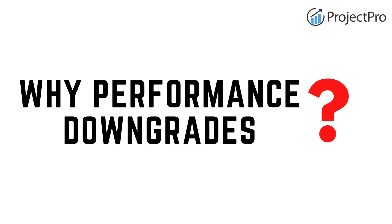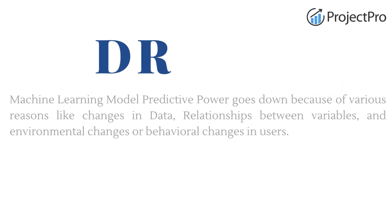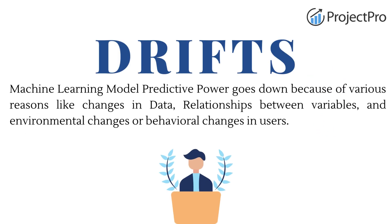So now the question comes: why does model performance degrade? Model performance goes down because of drifts. Drifts occur when an ML model's predictive power goes down because of various reasons, like change in data distributions, relationship between variables, environment changes, or behavioral changes in users.